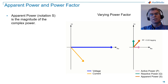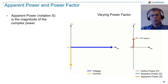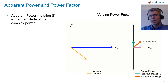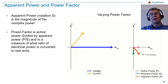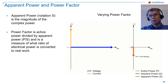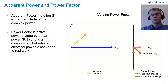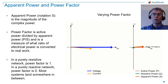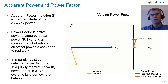To complete our story, we need to consider situations where both active power and reactive power exist, which is what normally happens. For this we introduce apparent power. Apparent power, notation S, is the magnitude of the complex power. Power factor is active power divided by apparent power, P over S. It's a measure of what ratio of electrical power is converted to real work. In a purely resistive network, power factor is 1. In a purely reactive network, power factor is 0. Most systems land somewhere in between.